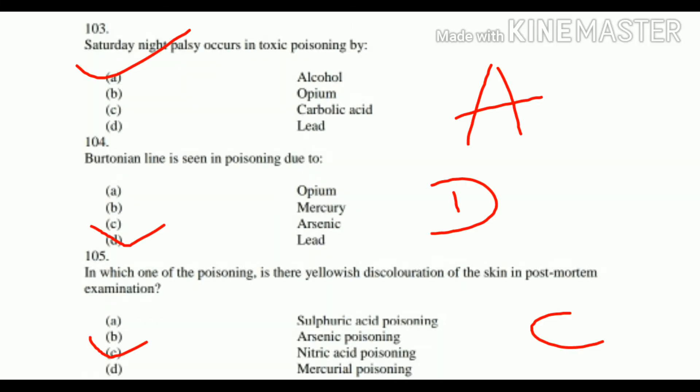Question number 103: Saturday night palsy occurs in toxic poisoning by: A. Alcohol, B. Opium, C. Carbolic Acid, D. Lead. The right answer is A. Alcohol.